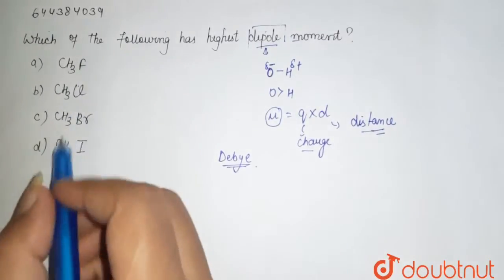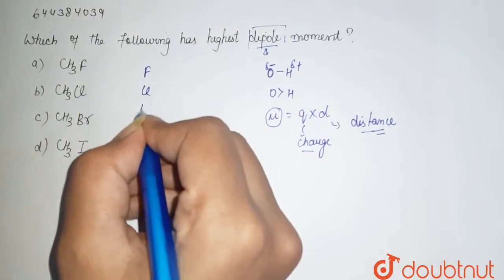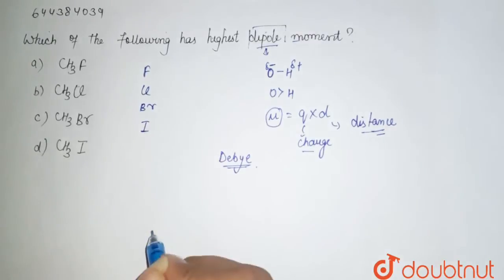Here we are given CS3F, CS3Cl, CS3Br, CS3I. Here it is the halogen family - that is fluorine, chlorine, bromine, and iodine.